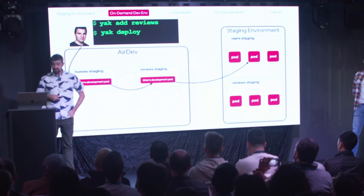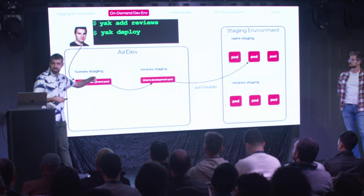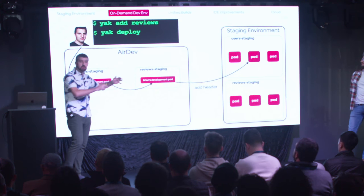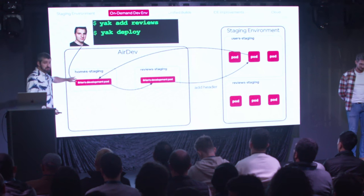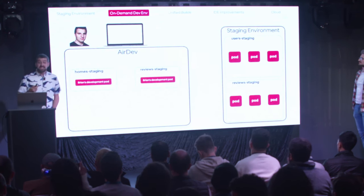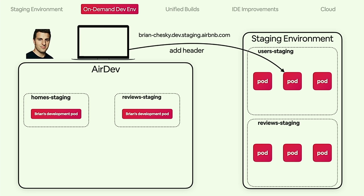Whenever we leave the dev environment, we attach a header that says this request is from Brian Chesky's dev environment. So whenever other services in the staging call chain need to call back to one of his services, our service mesh does this cross-cluster routing back to Brian's personal services. This is also great for end-to-end tests because the same header logic happens at our edge level. Each AirDev environment gets a private shareable URL, so Brian can share it with a coworker, and they get to see a version of the Airbnb staging website with only his changes applied.